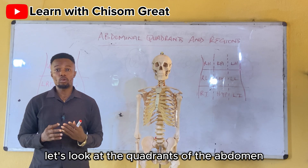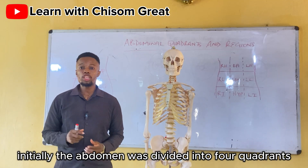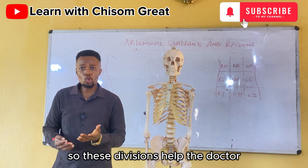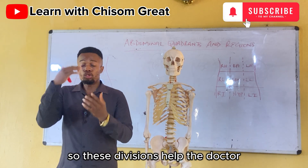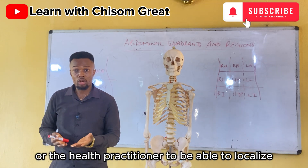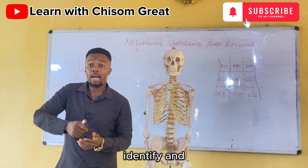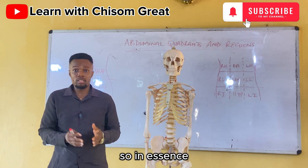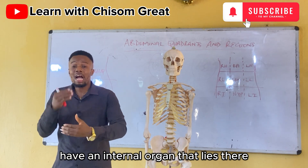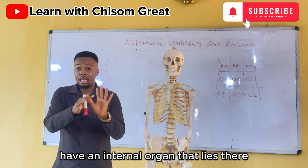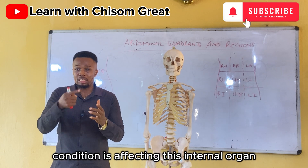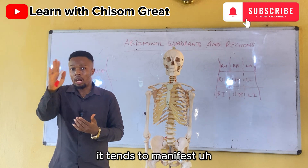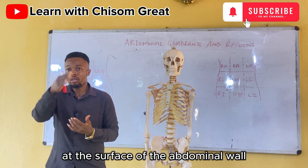Let's look at the quadrants of the abdomen. Initially, the abdomen was divided into four quadrants. These divisions help the doctor or health practitioner to be able to localize, identify, and diagnose an underlying disease condition.